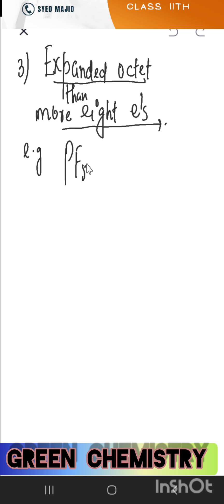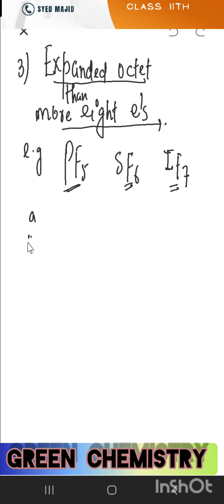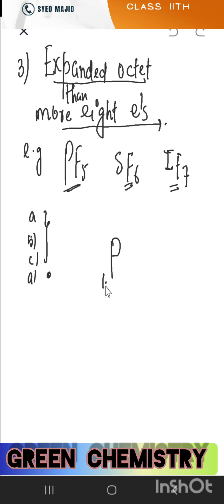Examples of expanded octet: PF₅, SF₆, and IF₇. MCQ questions may ask: 'Which of the following does not fulfill the octet rule?' — so you need to recognize these molecules. Understanding why they are exceptions is important.